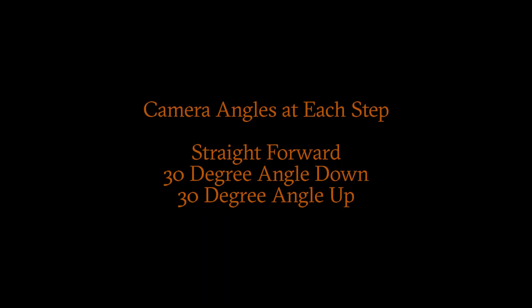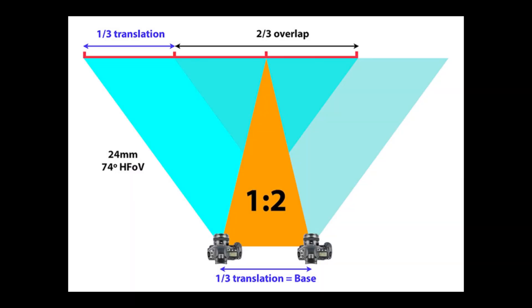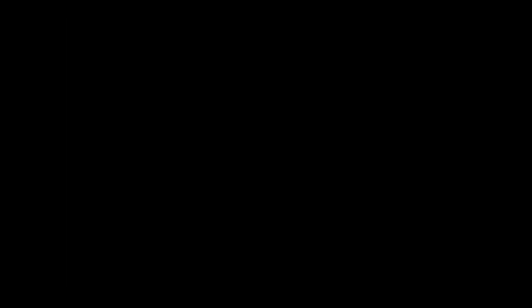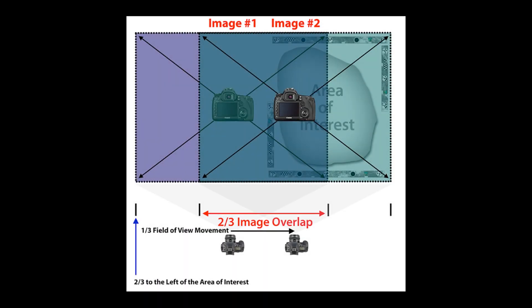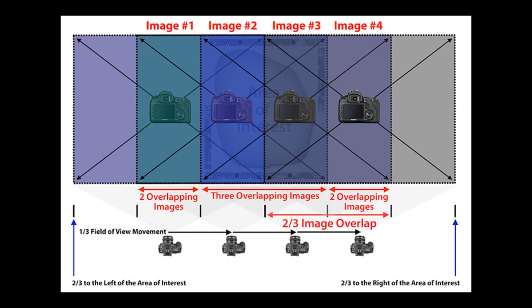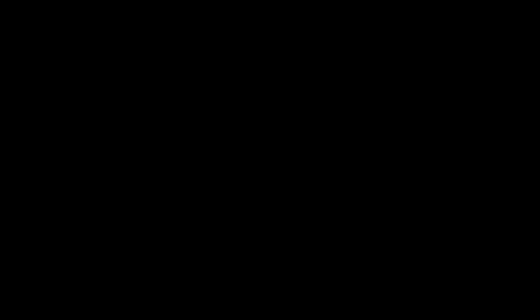Camera angles at each step are straightforward: 30-degree angle down, 30-degree angle up. I'm using a third overlap rule. At each image, I'm focused on two-thirds image overlap, and as I progress down the facade, I'll end up having enough overlap to capture texture and color.